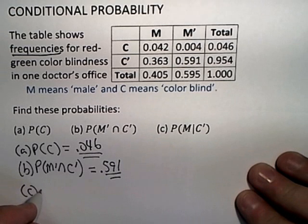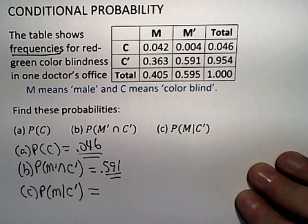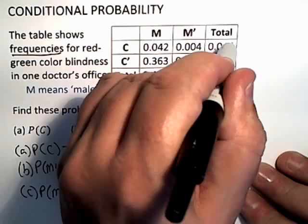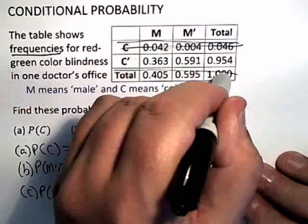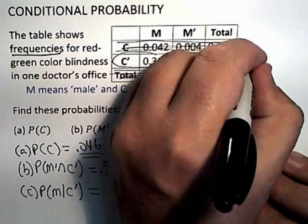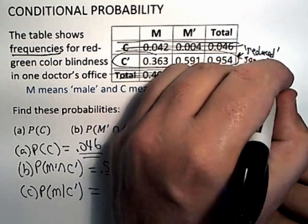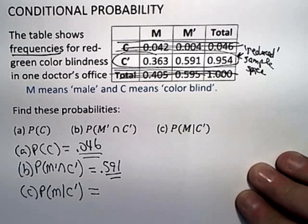The third problem is the one that's going to cause you problems if any of them do. When they give you frequencies you've got to be careful. Notice that this is a conditional problem. Given that the patient is not colorblind, just as before, we knock out the things that don't apply and get the reduced sample space to be the row including the non-colorblind people in that doctor's practice. And you're saying okay what's the probability now that this patient is male?